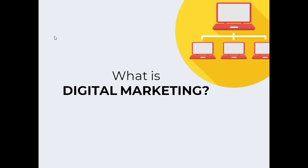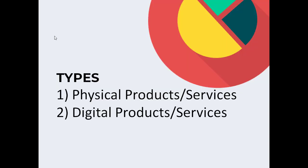Your products might be in any form. It can be physical or it can be digital. There are two types of products: physical products or services, and digital products or services.